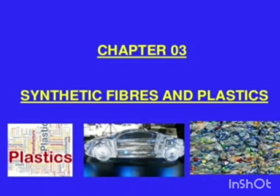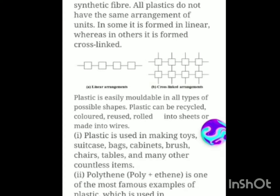Welcome back students for the second session of Science Chapter 3, Synthetic Fibers and Plastics. Plastic is also a polymer like synthetic fiber. All plastics do not have the same arrangement of units. In some it is formed in a linear arrangement, whereas in others it is formed cross-linked. You can see in the image that the first image shows a linear arrangement with one chemical unit behind another forming a long chain, and the second image shows a criss-cross arrangement. Do you know why plastic is so popular?